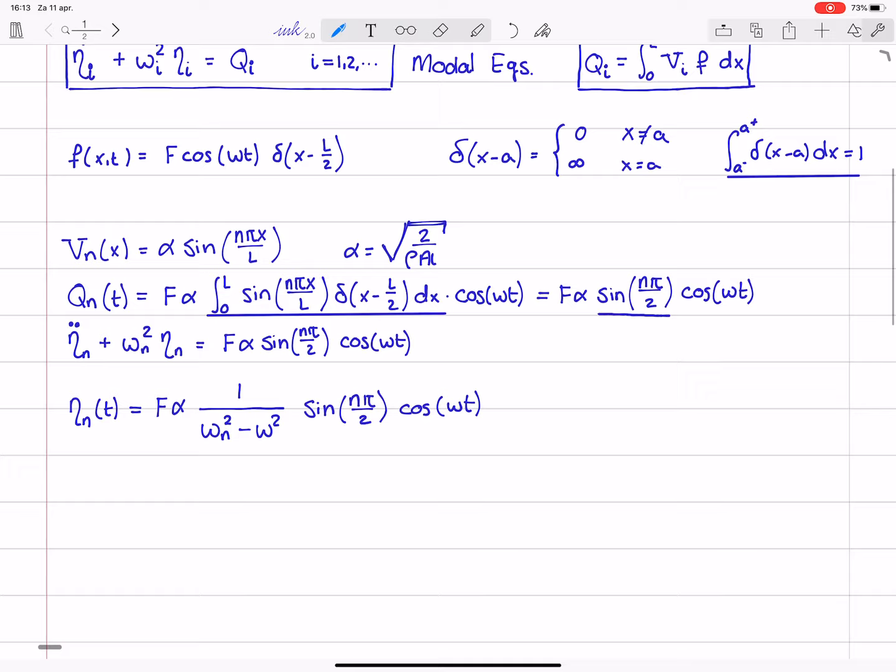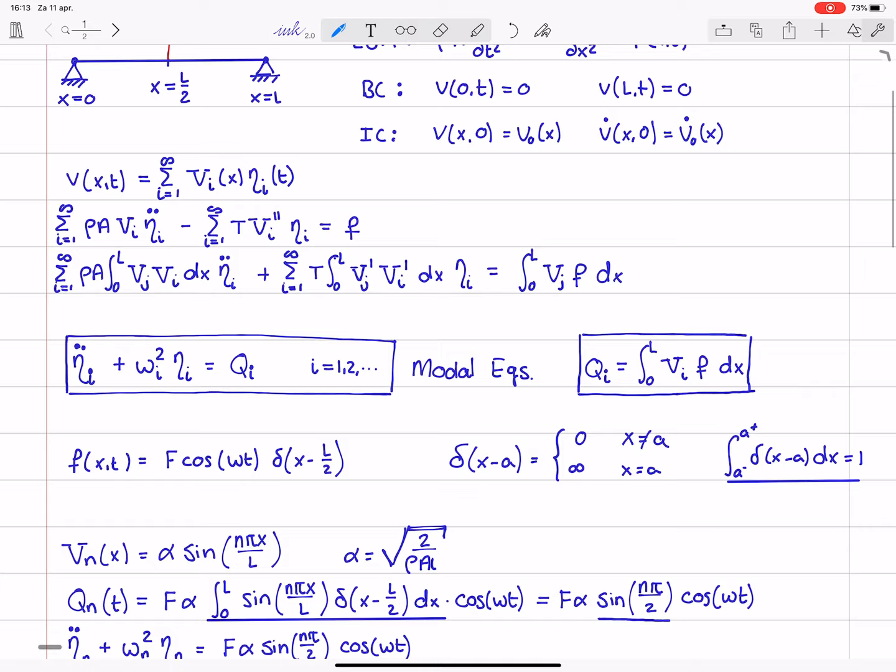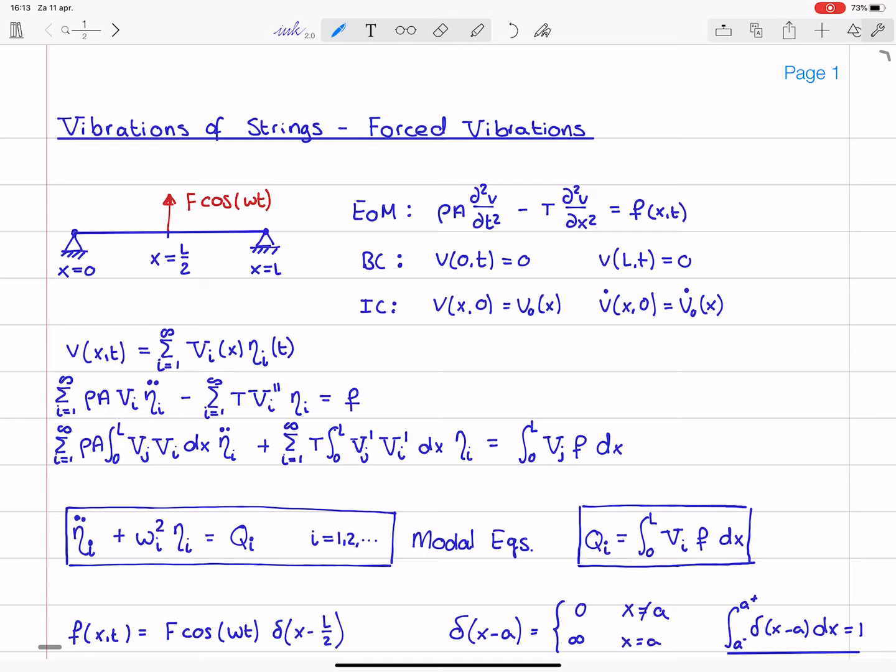So, I will continue with this solution for the modal coordinates. I think it's interesting that you see here that the response is a function in time that is with the same frequency. From this sine n pi divided by 2 you can again see that only odd numbered mode shapes will have a non-zero contribution and that is again because the excitation is symmetric.